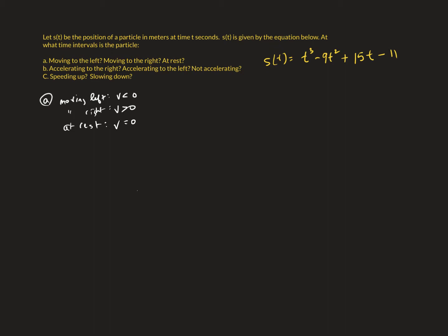So what I'd like to know is when the velocity is what sign. The first thing I'm going to need to do to answer this question is find velocity. Velocity is the derivative of position. The derivative of that equation would be 3t squared minus 18t plus 15. Now, if I were looking at this as a graph, it'd be an upward-facing parabola crossing the x-axis twice — so there'd be a spot where it's above the x-axis, below the x-axis, and at the x-axis.